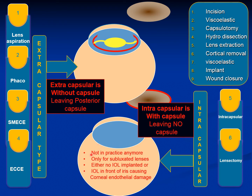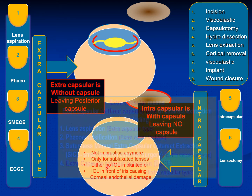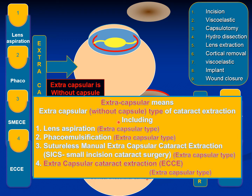So remember: extracapsular means leaving the posterior capsule behind, while intracapsular means leaving no capsule behind. Intracapsular extraction is not in practice anymore — we very rarely do it, only as a lensectomy for subluxated lenses. In such cases, you either don't put a lens in, or you place it in front of the iris, which may cause damage to the cornea. To clarify: extracapsular extraction includes lens aspiration, phacoemulsification, sutureless manual extracapsular cataract extraction, and extracapsular cataract extraction. The whole group is called extracapsular extraction, while one part of it is specifically called extracapsular cataract extraction.